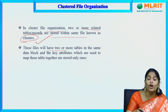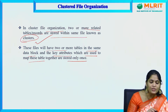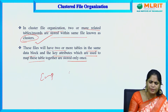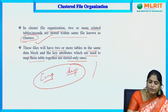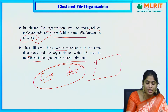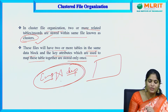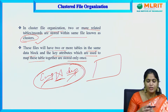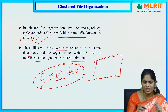These files will have two or more tables in the same data block, and the key attributes used to map these tables together are stored only once. For example, if we have an employee table and a department table, we have two tables that we need to join into a single table. We are making these two into a cluster. In DBMS context, join means we do a Cartesian product — we consider at least one common column between the two tables and make it a single table using one of the keys, called the cluster key.